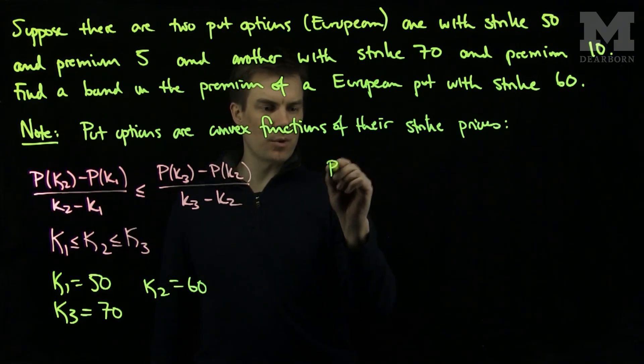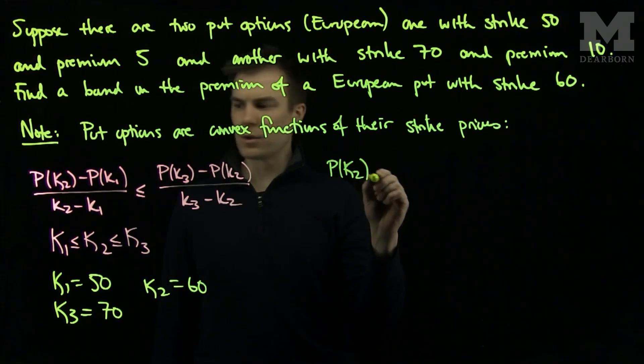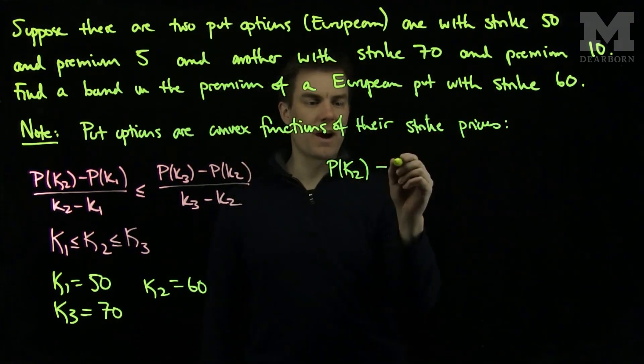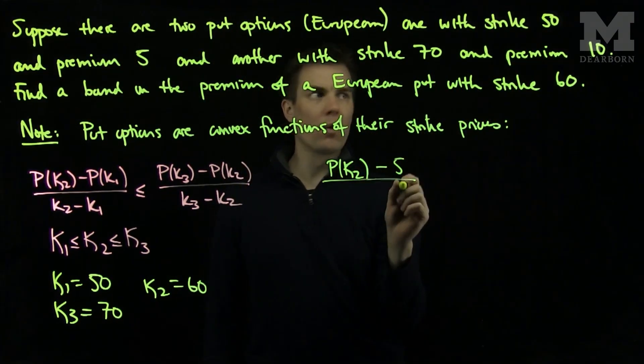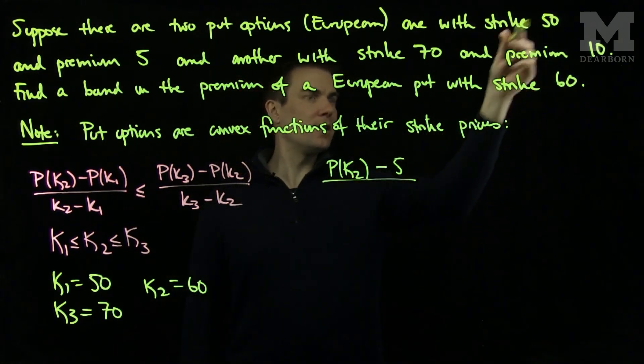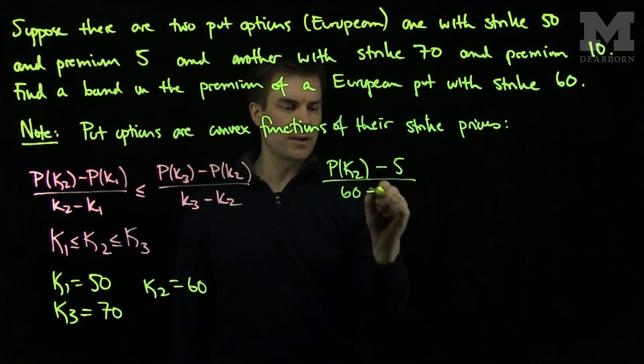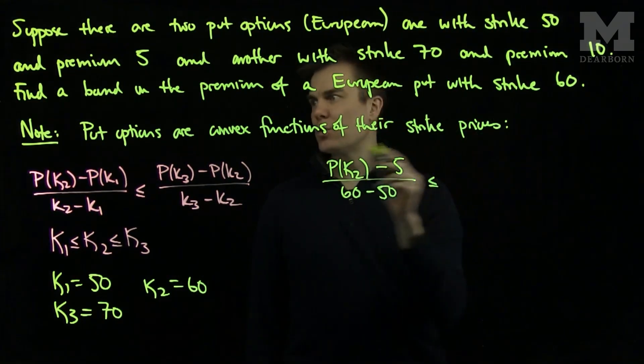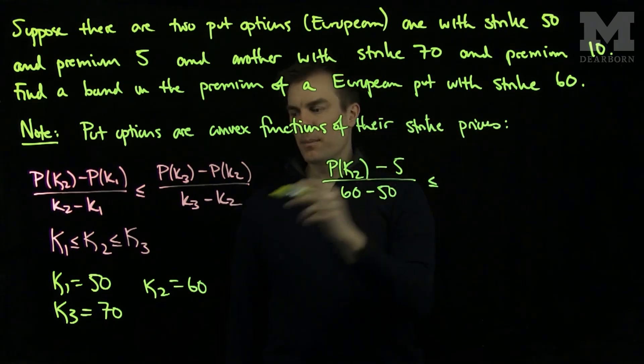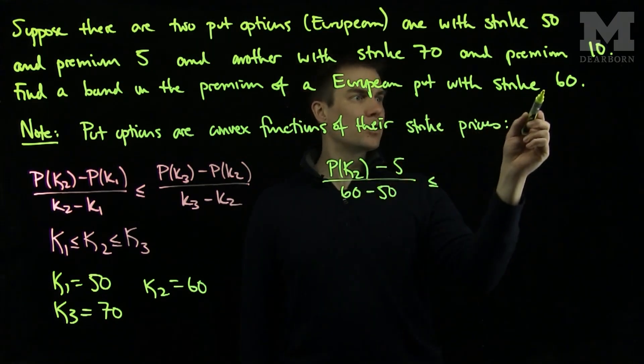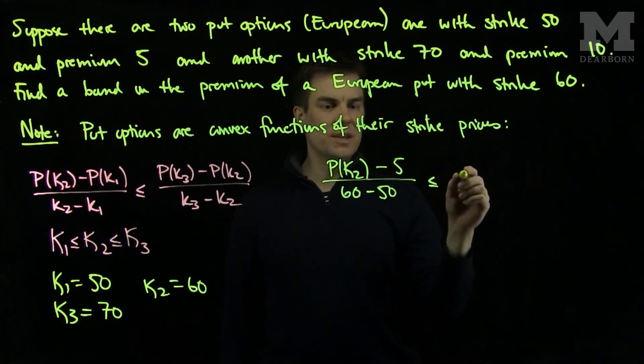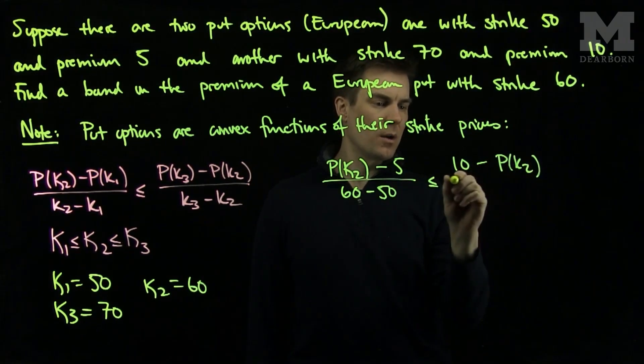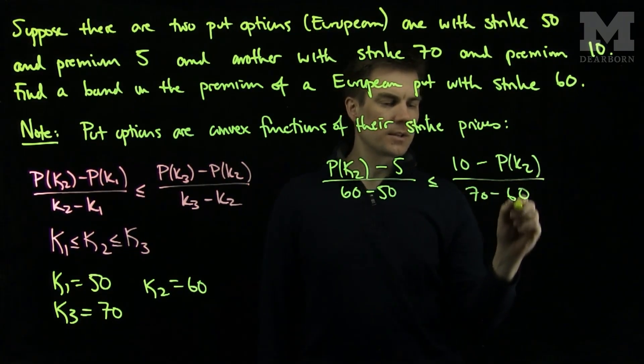I will have P(k2), which is something we don't know, P(k2) minus P(k1), that's the premium on a put option with strike k1, which we know to be five, over the differences in the strike price. The difference in sixty and fifty is ten, so I'll have sixty minus fifty, and that just gives me ten, is less than or equal to P(k3), which we know to be the premium on a seventy strike put, which is ten, minus P(k2), which we do not know, over seventy minus sixty.